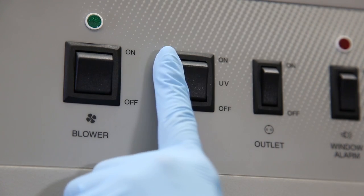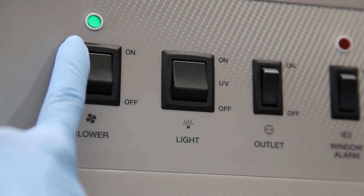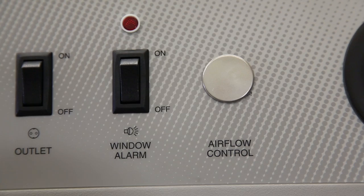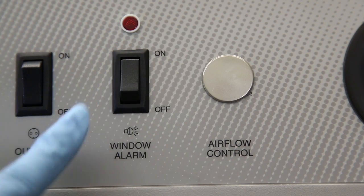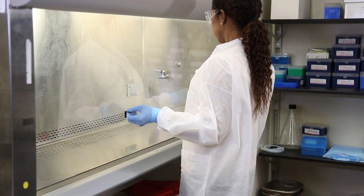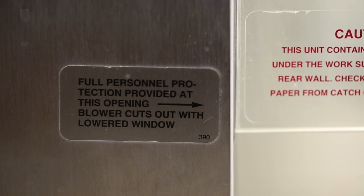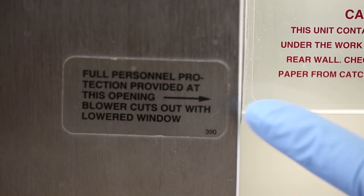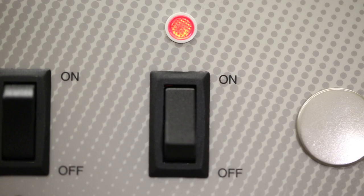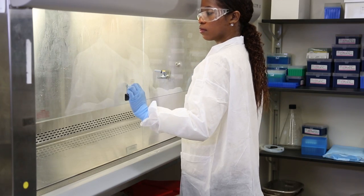Next, turn on both the fluorescent light and the blower motor. Confirm that the alarm button is on, and open the sash and set it to the proper height, as noted on the outside wall of the BSC. The BSC sash alarm will sound if the sash is set too high.